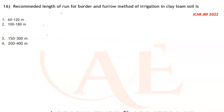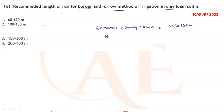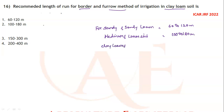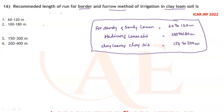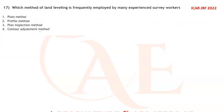For the recommended length of run in border and furrow irrigation: for sandy and sandy loam soil it is 60 to 120 meters; for medium and loam soil it is 100 to 180 meters; for clay loam and clay soil it is 150 to 300 meters. For clay loam soil, the answer is 150 to 300 meters — option three is correct.